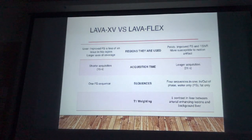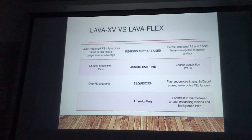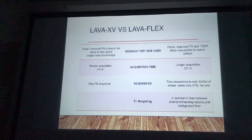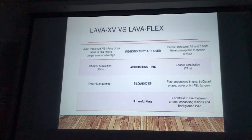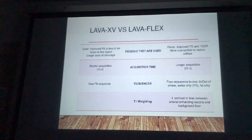One nice thing about LavaXV compared to LavaFlex is that LavaXV is a shorter sequence — about six seconds shorter based on a test scan we did. It is a shorter acquisition compared to LavaFlex, which can run over 21 seconds, but there's a reason for that. With LavaXV we're only getting a fat sat sequence, whereas with LavaFlex we're getting four images in one: in-phase, out-of-phase, water-only, and fat-only. That's why when you acquire those images you get multiple series — for example series 5, 500, 501 — with in-phase and out-of-phase, all of which benefit the radiologist in the areas they're evaluating.